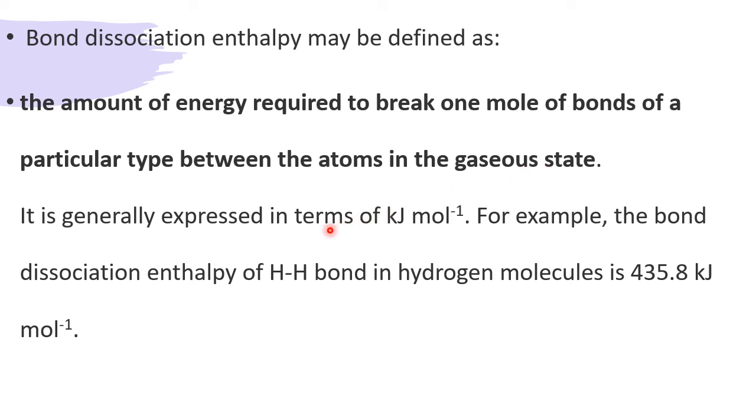It is expressed in kilojoules, and always per mole, for one mole. So kilojoules per mole is the unit for the bond enthalpy or the bond energy. For example, the bond dissociation enthalpy for HH bond in hydrogen molecule is 435.8 kilojoules per mole. This is expressed here.